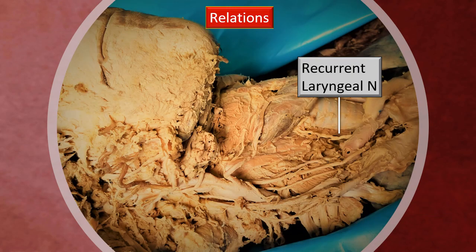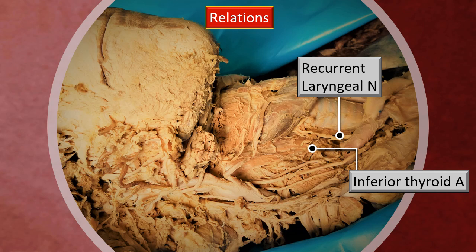The recurrent laryngeal nerve is very typically seen. You can see the trachea and the esophagus — the brownish surface of the esophagus forms an excellent backdrop for identification of the recurrent laryngeal nerve — and that is the inferior thyroid artery. These two, the inferior thyroid and the recurrent laryngeal nerve, are in close vicinity. In contrast to the superior thyroid, the inferior thyroid divides into several branches that enter the thyroid gland, so as you trace the recurrent laryngeal nerve superiorly, the nerve gets entangled in a mesh of branches of the inferior thyroid artery. This is important surgically.